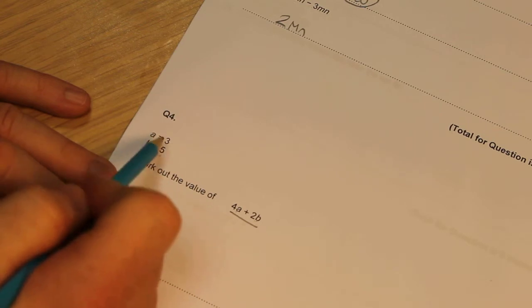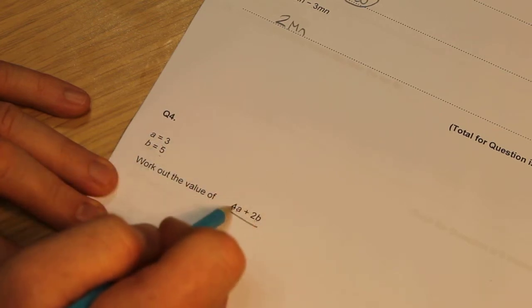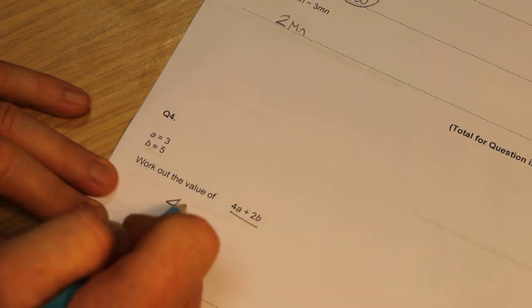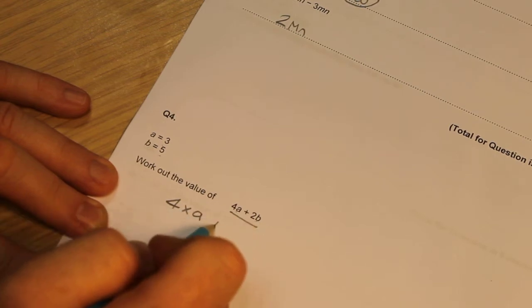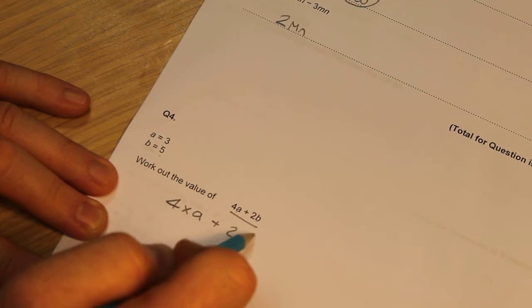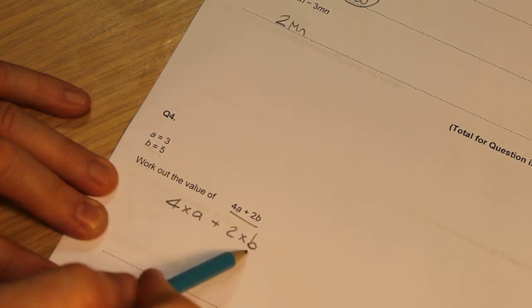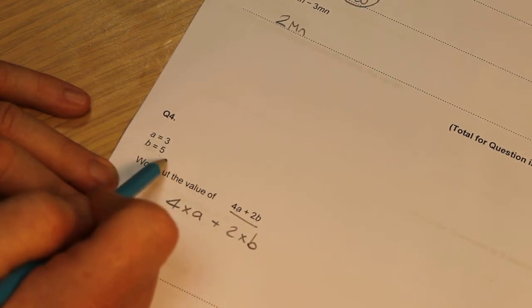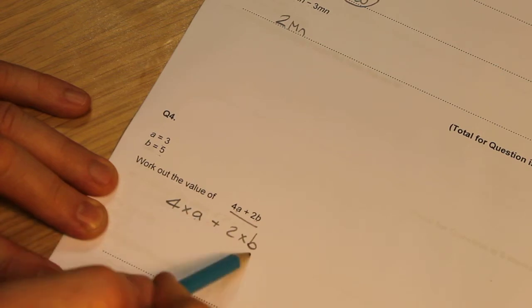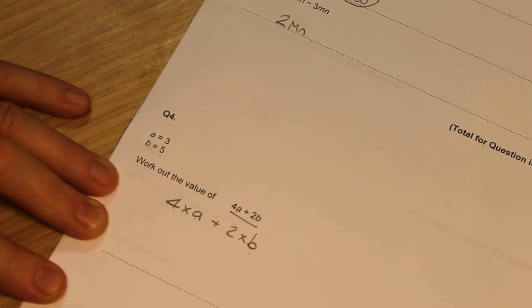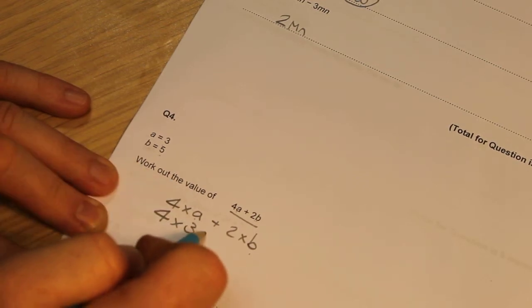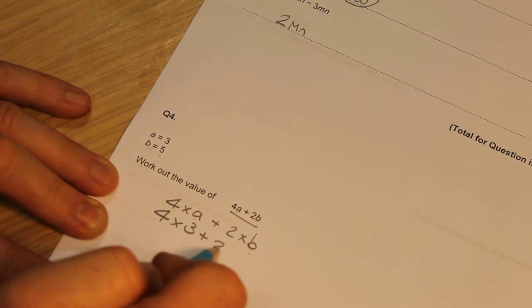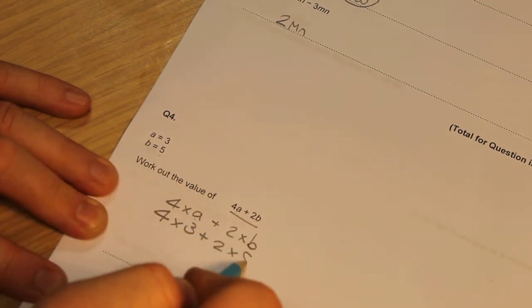But just before I start substituting, I'm going to rewrite this, because I know that 4a is the same as 4 times by a, and I know that 2b is the same as 2 times by b. It's worth just knowing that, because when I substitute these in, I can just literally replace the a and the b with these two values, which is what I'm going to do now. So it's 4 times by 3, plus 2 times by 5.